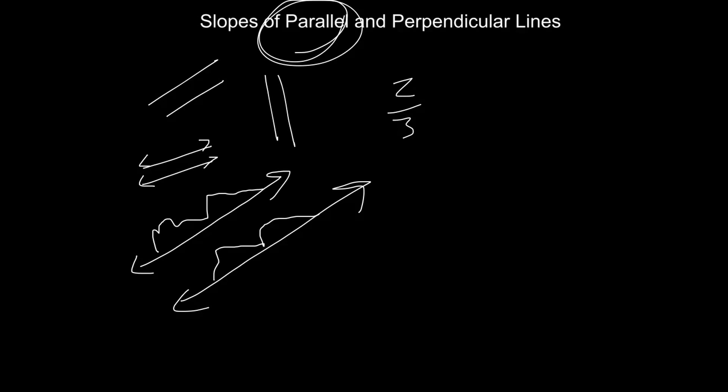So that means if you have, say, 2 over 3 is the slope of one of your lines, the line that's parallel to that, its slope has got to be 2 over 3.